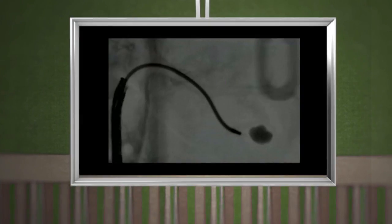Once a catheter is delivered to the area of the lesion, a number of different tools, such as needles or biopsy forceps, can be used to obtain tissue that can then be looked at by pathologists under a microscope to give us a very definitive diagnosis of what the abnormality is.